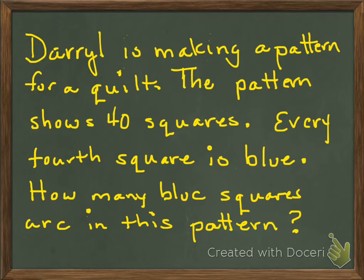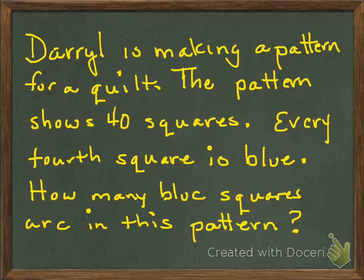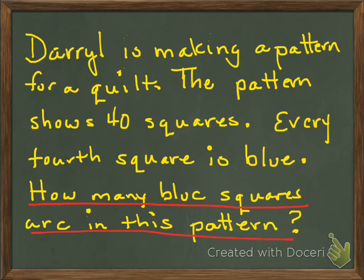Here's our word problem. Daryl is making a pattern for a quilt. Maybe you have quilts in your bedroom or in your home. The pattern shows 40 squares, and every fourth square is blue. How many blue squares are in this pattern? The first thing I want you to do is underline what you are asked to find. If you underlined 'how many blue squares are in this pattern,' that's what you're being asked to find.